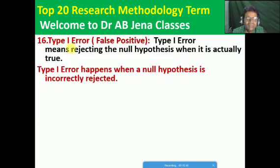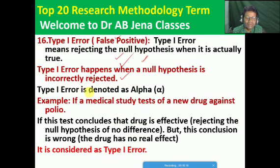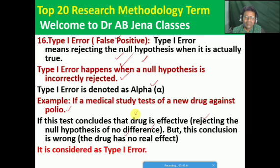Next, Type 1 error — also known as false positive. Type 1 error means rejecting the null hypothesis when it is actually true. It happens when the null hypothesis is incorrectly rejected. Type 1 error is denoted as alpha. Example: if a medical study tests a new drug against polio, and the test concludes that the drug is effective but the researcher rejects the null hypothesis — the conclusion is wrong, the drug has no real effect. This is a Type 1 error.